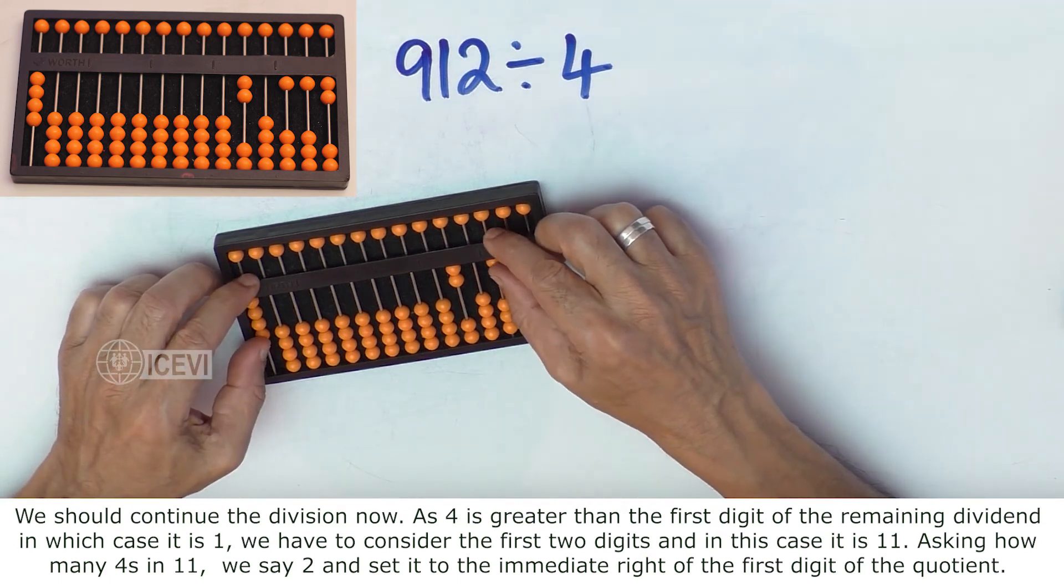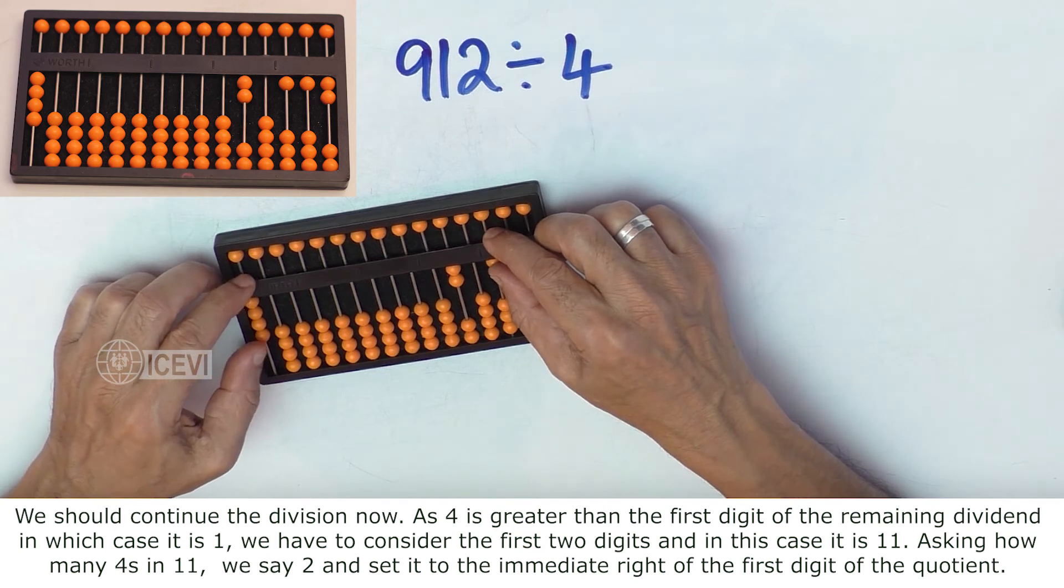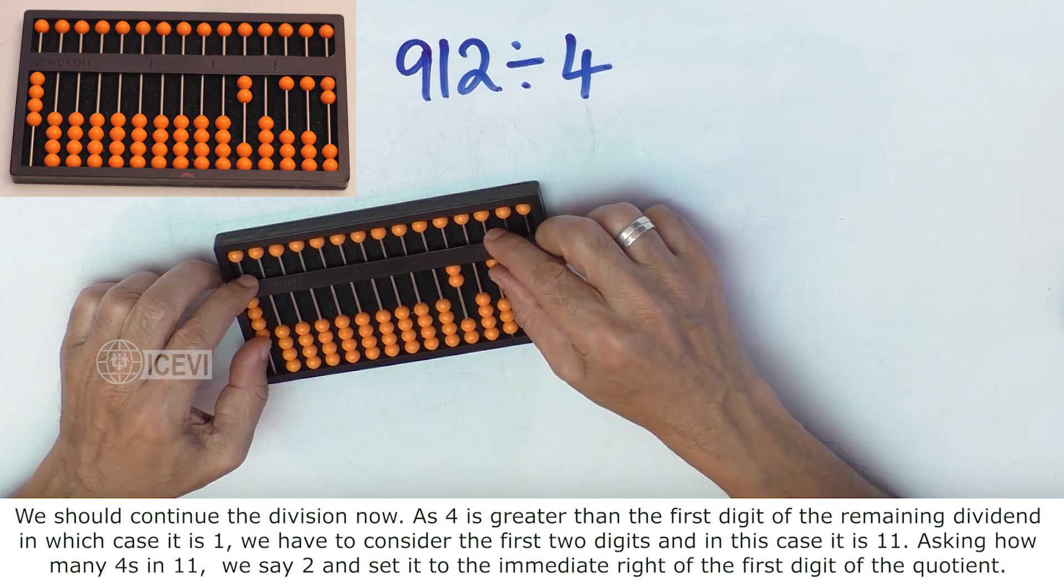Now let us look at the divisor, it is 4. Now look at the first digit of the dividend, it is 1.